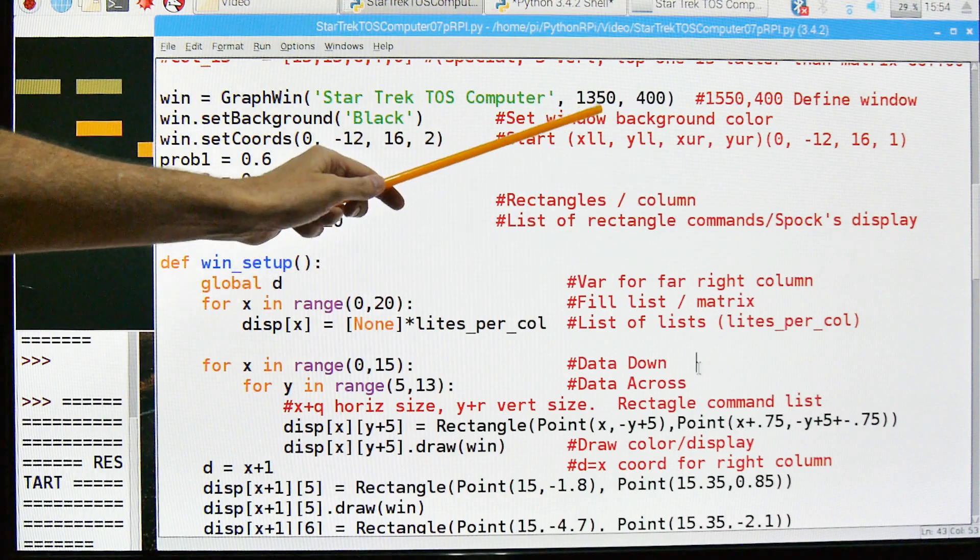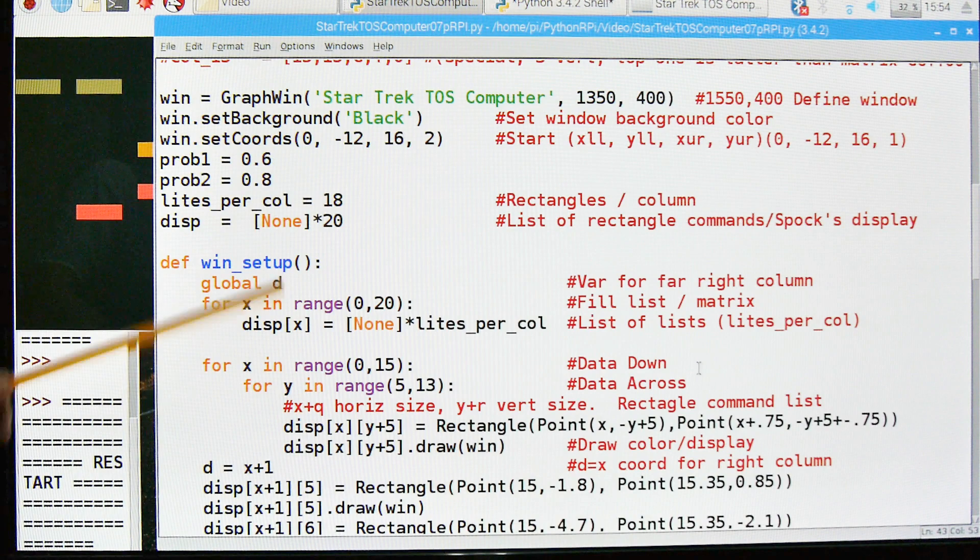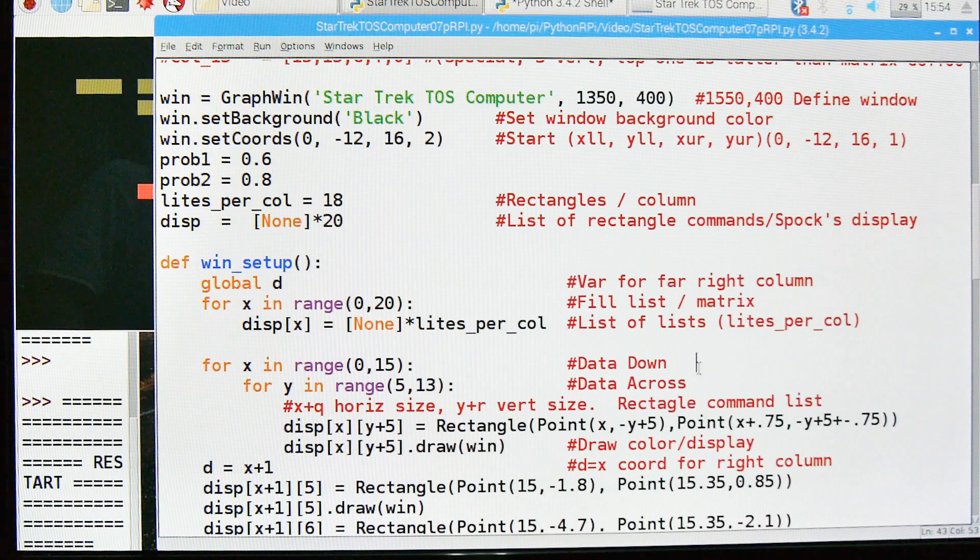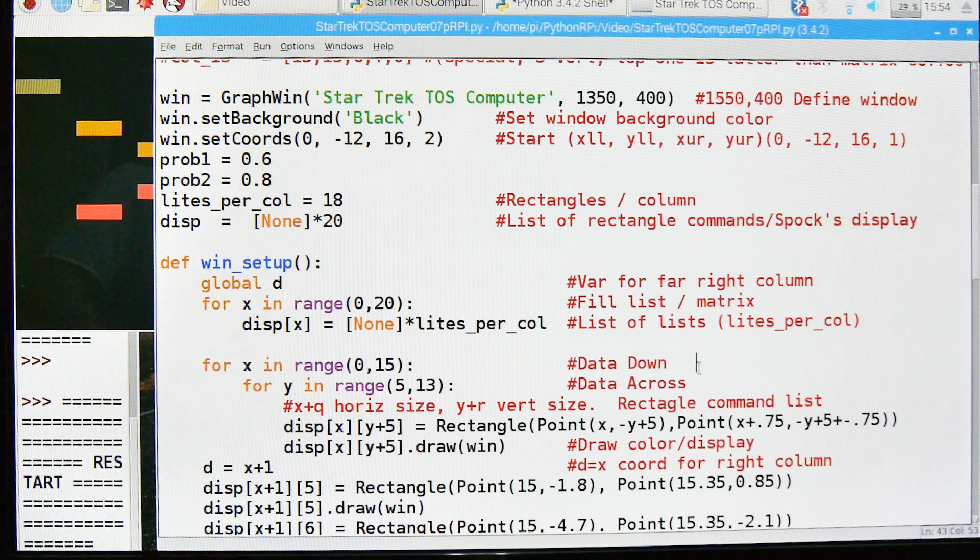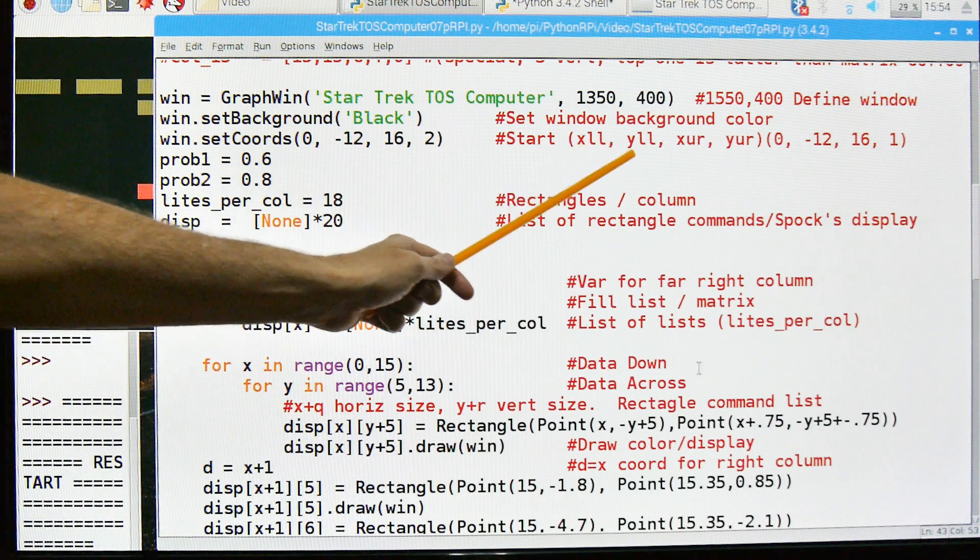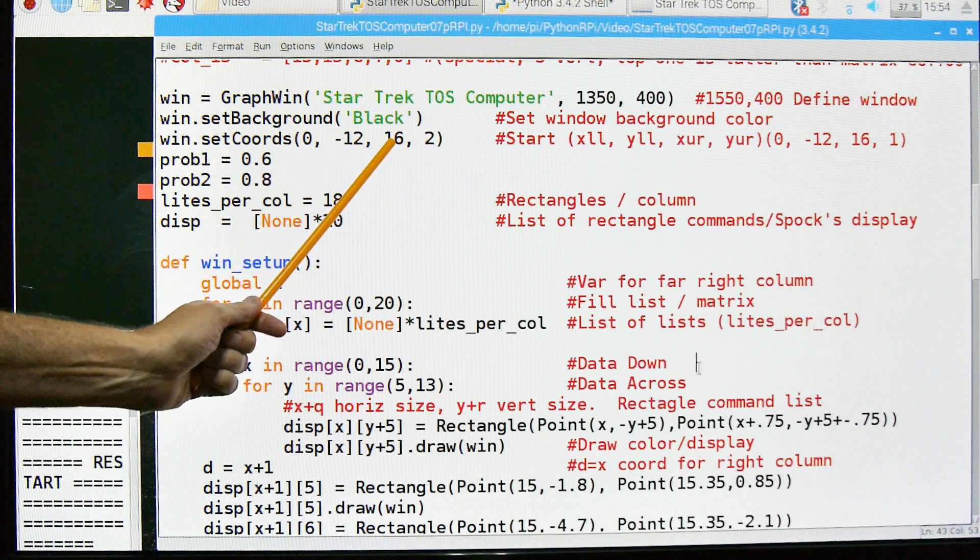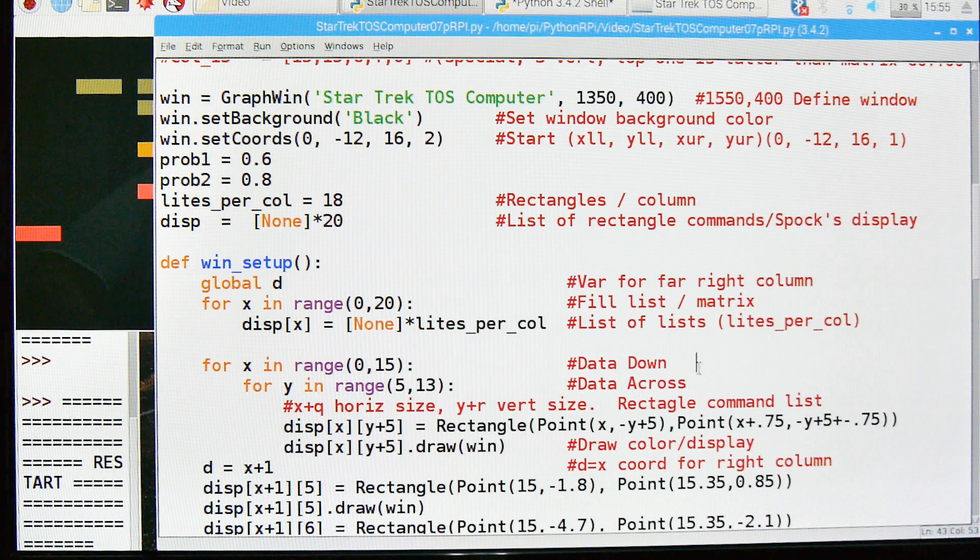I had to change the window size. The original was this for the Windows. But I had to downsize it to get it on the TV screen. So that defines our window. We're going to set the background color as black. And then we're going to set these window coordinates to 0, minus 12, 16, and 2. The lower left corner will be the X lower left and then the Y lower left. This is upper right, X upper right, and Y upper right.